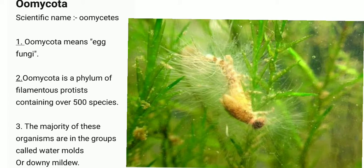Point 2: Oomycota is a phylum of filamentous protists containing over 500 species. Oomycota is filamentous. Point 3: The majority of these organisms are in the groups called water molds or downy mildew.